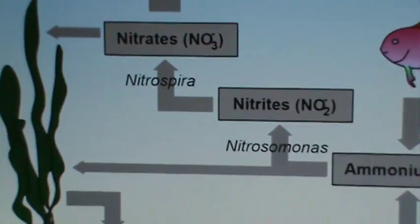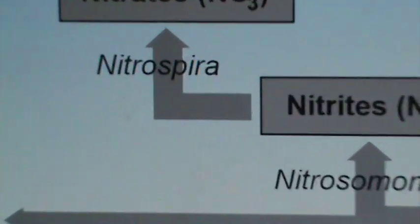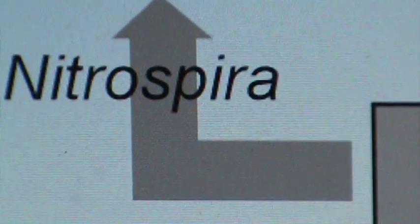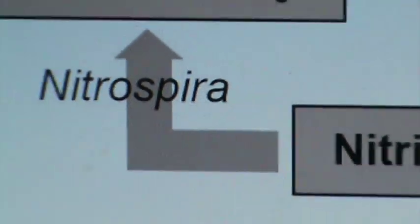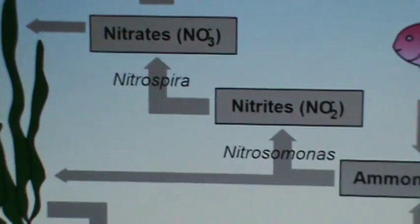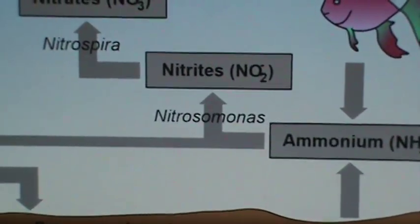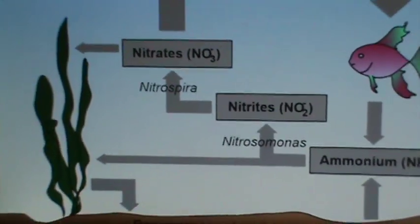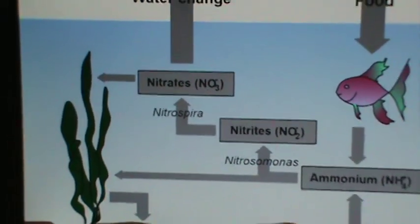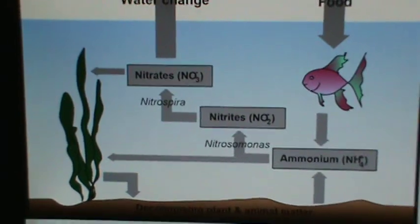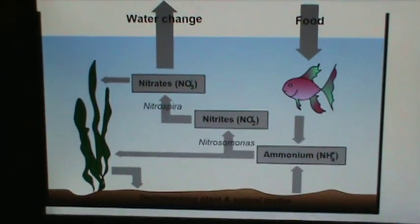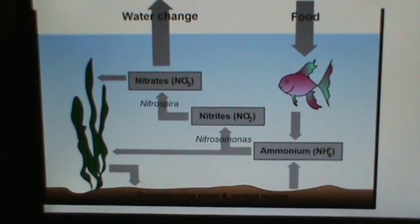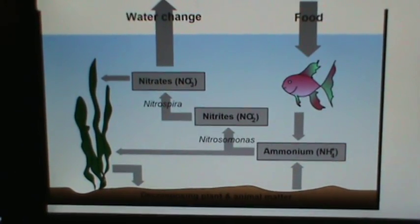And then this other bacteria, nitrospira, will take the nitrite and convert them to nitrates. And this is where a lot of fish tanks kind of end as far as the process goes.